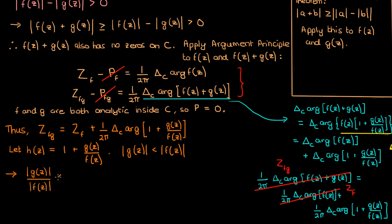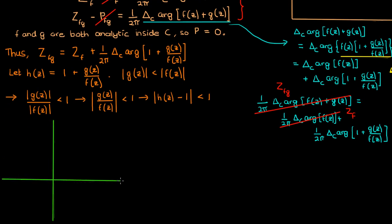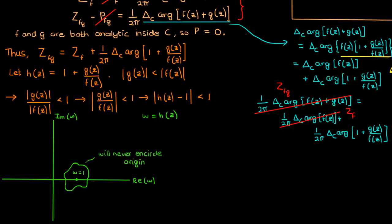Since the modulus of g(z)/f(z) is less than 1, it follows from the definition of h(z) that the modulus of h(z) minus 1 is also less than 1. So if we draw the contour representing w = h(z) in the complex plane, that contour is centered at w = 1, and because the modulus of all points on that contour is less than 1, the contour will never encircle the origin — it never deviates a distance greater than 1 from the center at w = 1. Since this contour never encircles the origin, its winding number must be 0.